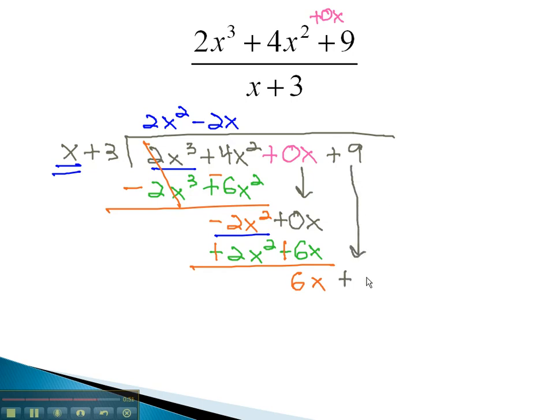Bring down the 9, so we can finish the problem. Dividing the front terms, 6x divided by x is 6. Multiplying the 6 by the divisor will give us 6x plus 18. Wait, I multiplied wrong here. 6 times 3 is 18. Changing the sign will give us negative 9 for our remainder.